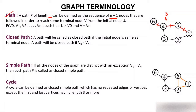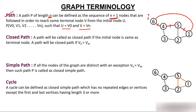In a path, U is V0 (the initial node) and V is Vn (the terminal node). A closed path is one where the initial vertex and the final vertex are the same — that is, when U equals V.